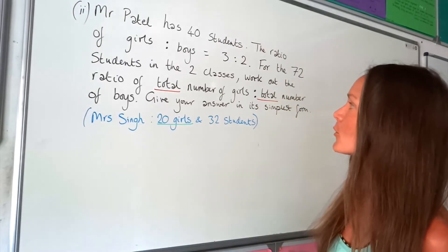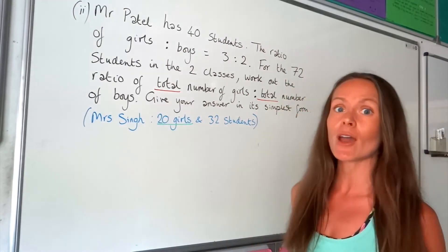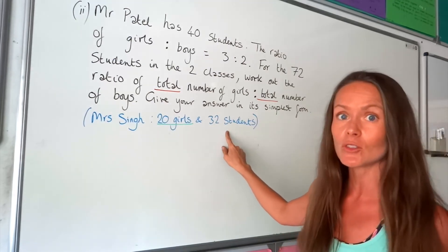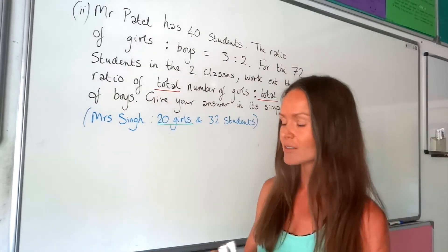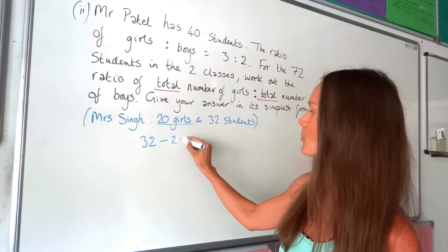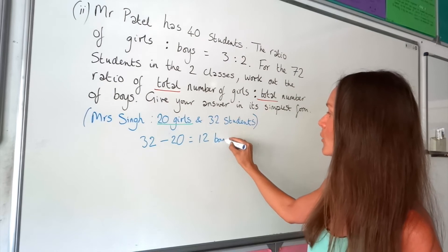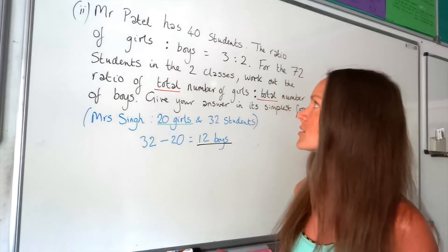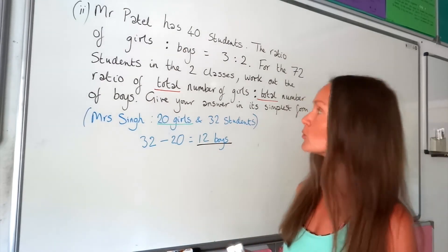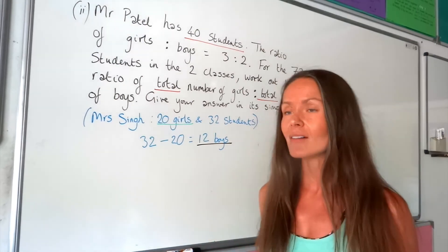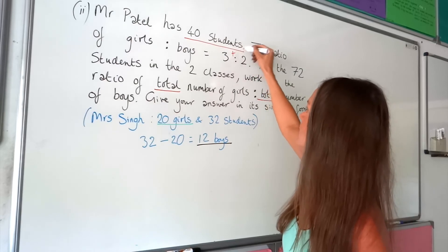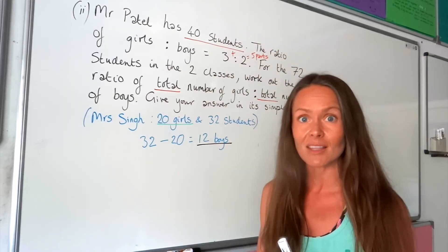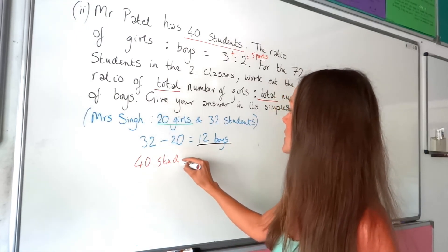Before we can work out the ratio of the total number of girls to boys, we need to know how many girls and boys there are in each class. From part one, Mrs. Singh has 20 girls and 32 students total, so 32 minus 20 gives 12 boys in her class. For Mr. Patel's class, we're told he has 40 students in total. The ratio gives three parts plus two parts, which is five parts. So 40 students equals five parts.